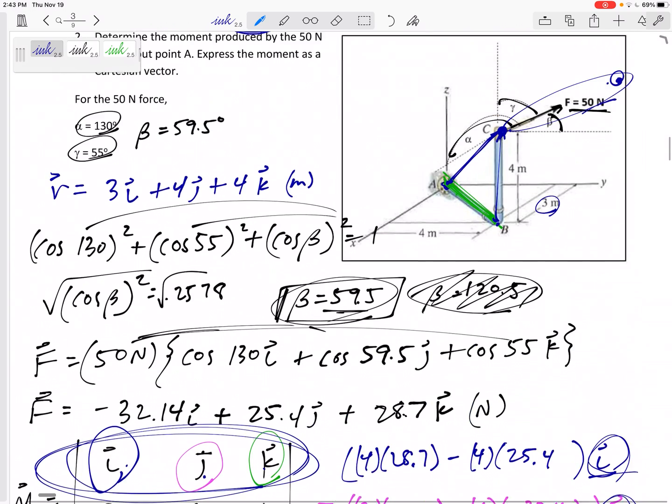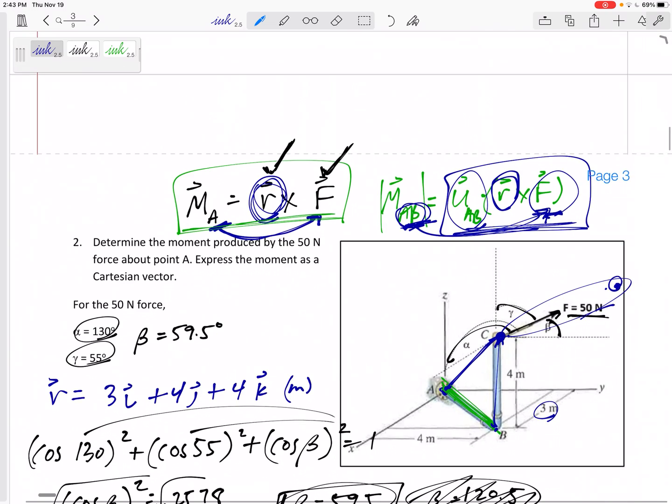And then the last thing, and we have a lot of examples, a lot of videos you can go back and watch. But the last thing is, sometimes I ask for a moment about a point, but I ask for the total moment about a point. And so what happens is you calculate this magnitude, and then you've got one more step.